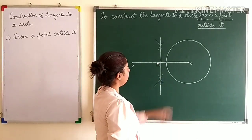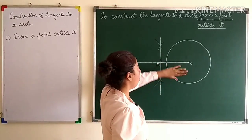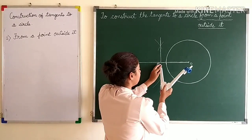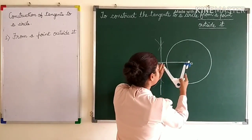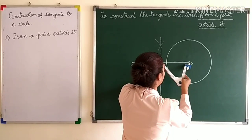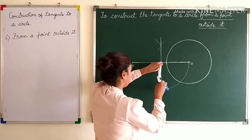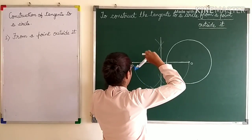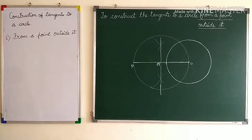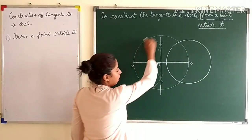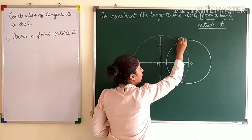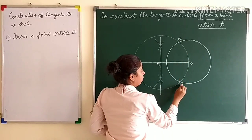Now taking M as the center and MO as the radius, we draw another circle. Now we have drawn one more circle. Wherever this circle cuts our previous circle, we will name it as Q and R.